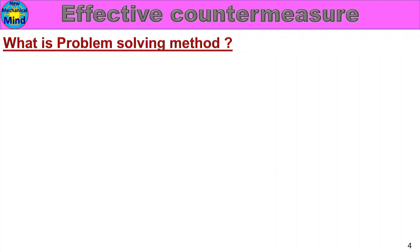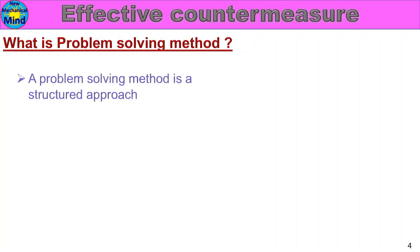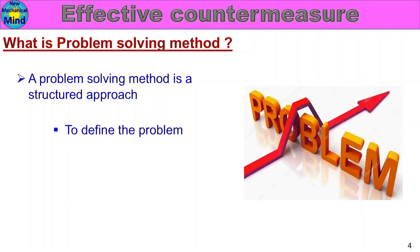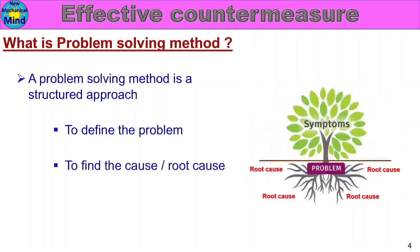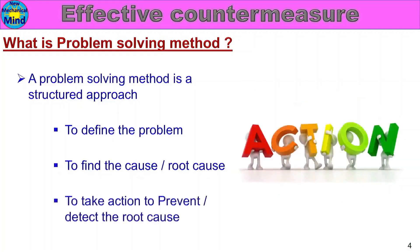Next, what is problem solving method? Problem solving method is a structured approach — if we solve a problem, we follow a procedure. For example, the steps are: define the problem, explain the problem, find the cause and root cause, take action, and prevent and detect the root cause. This is the definition of problem solving method.